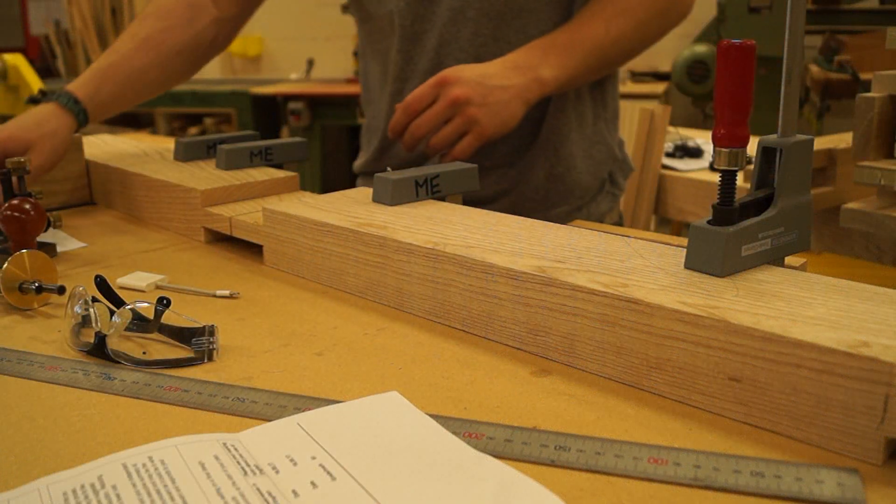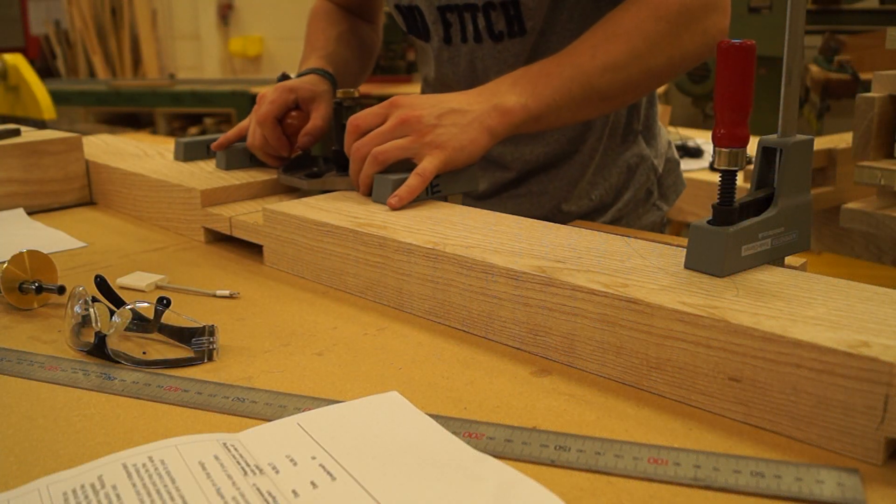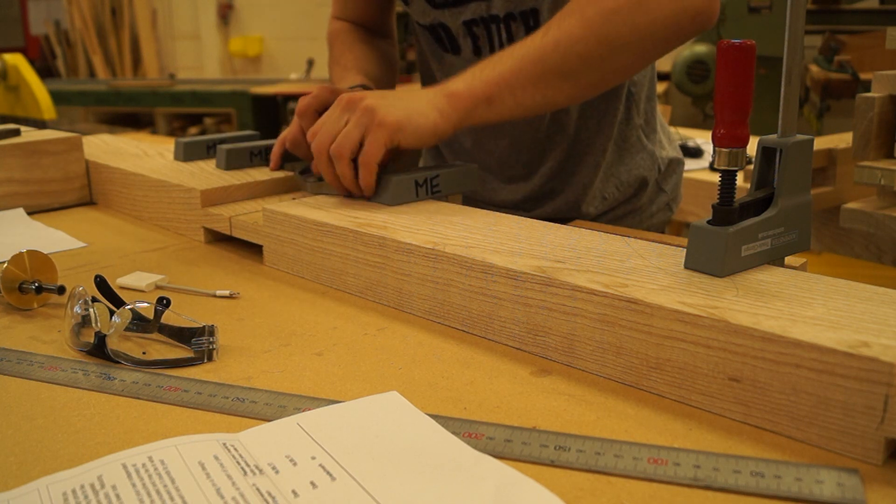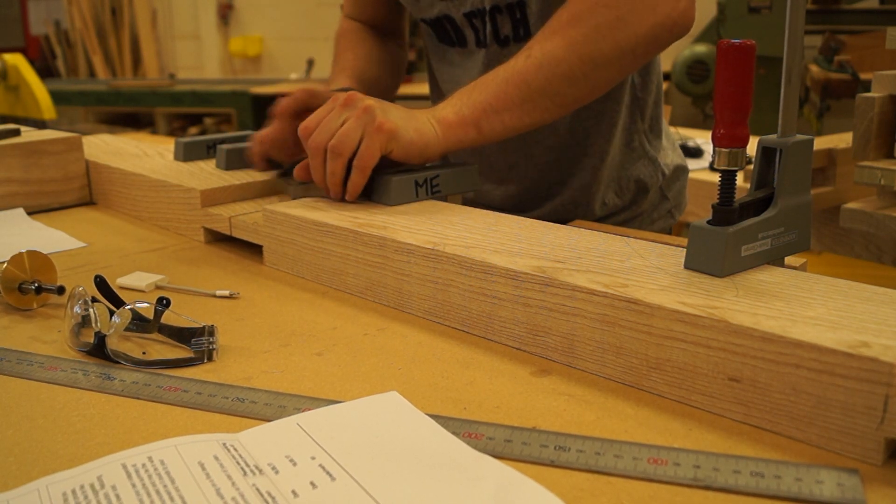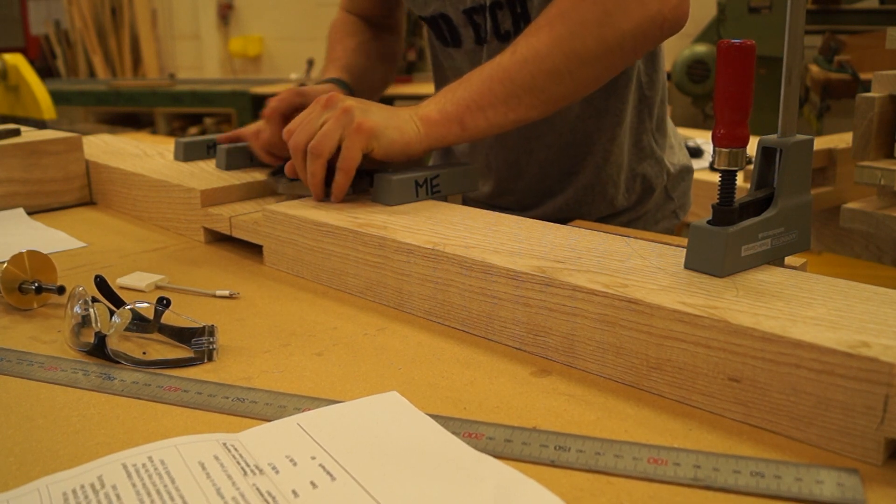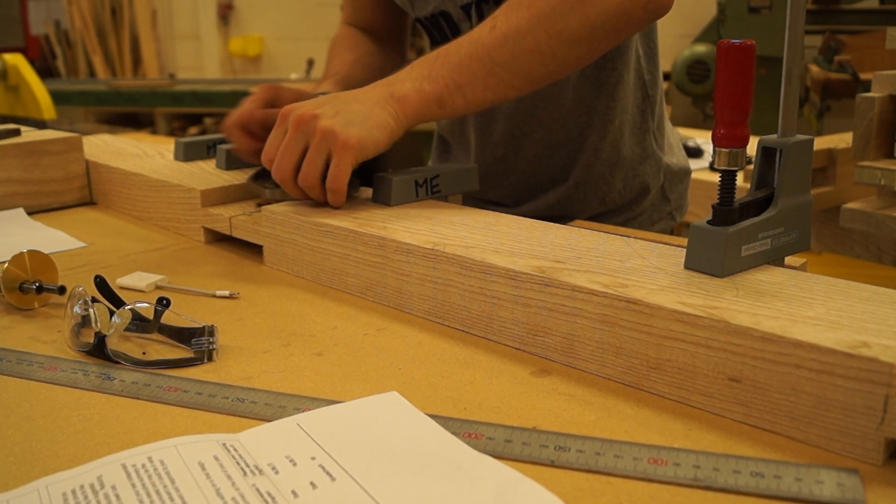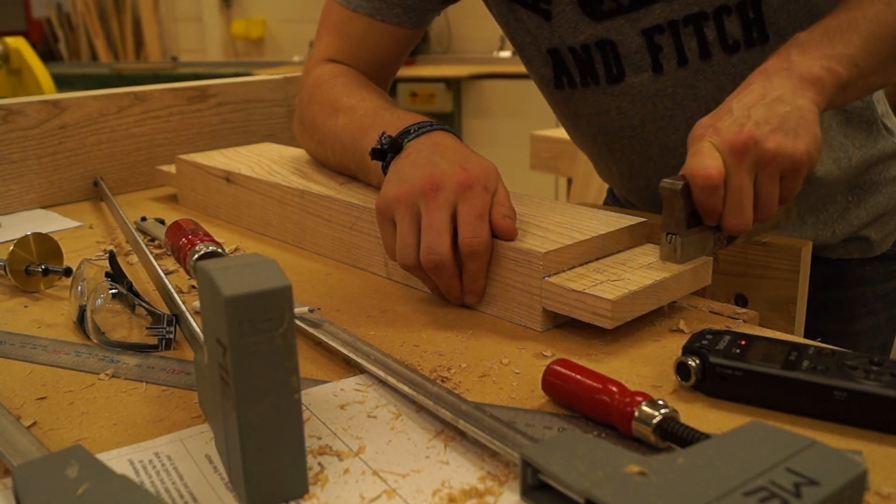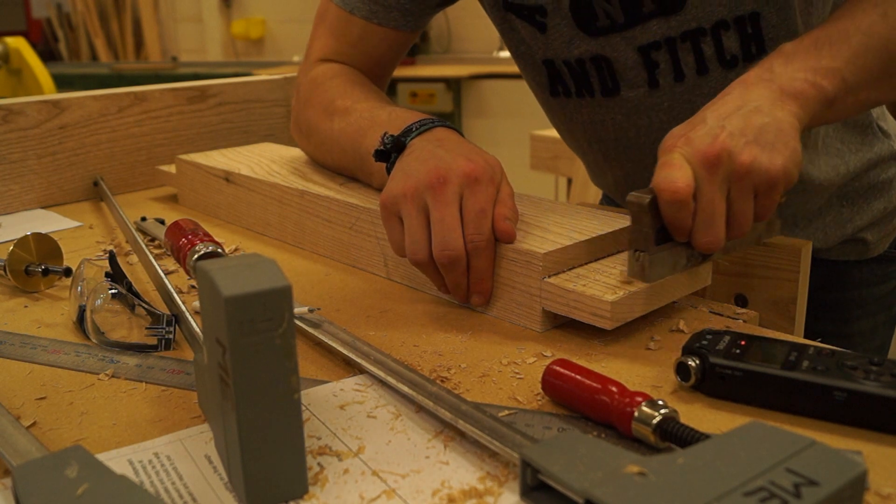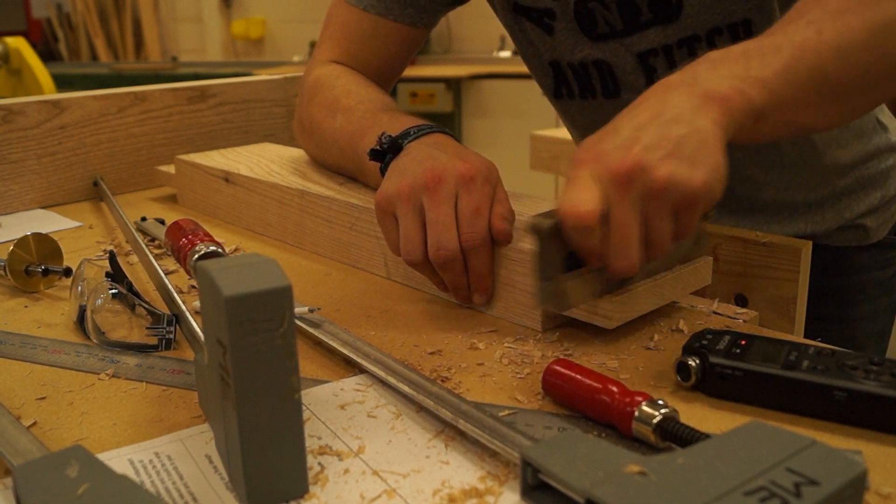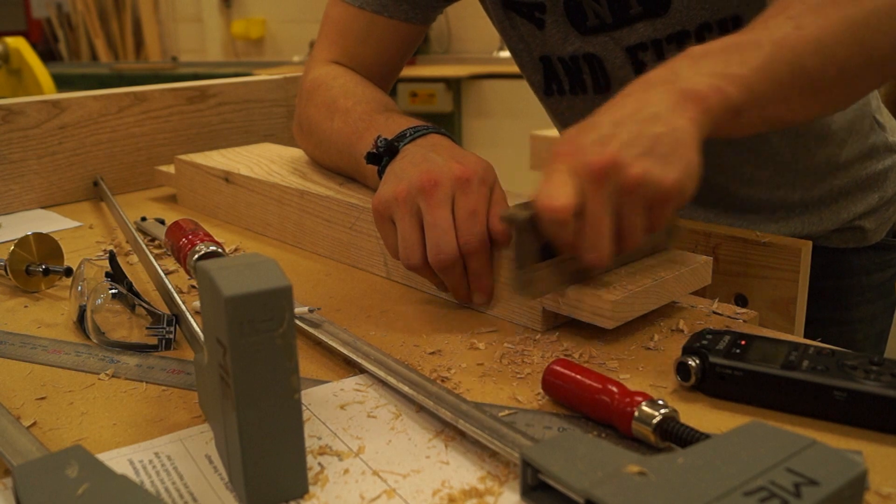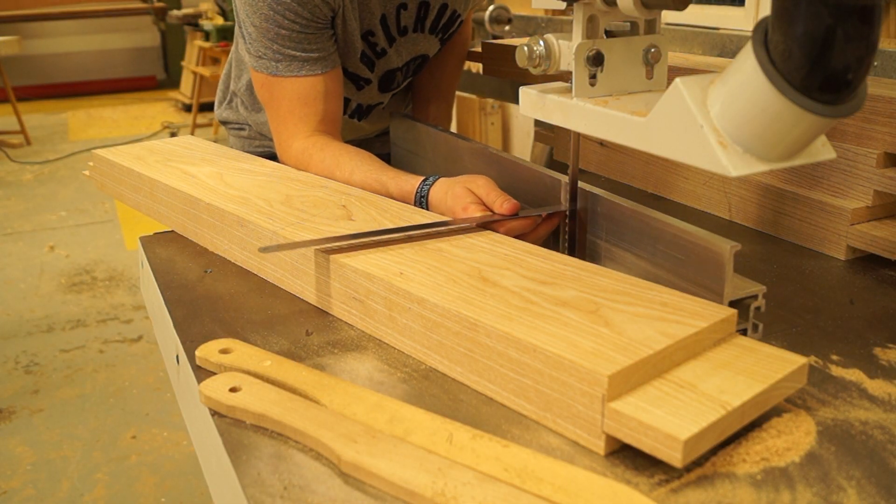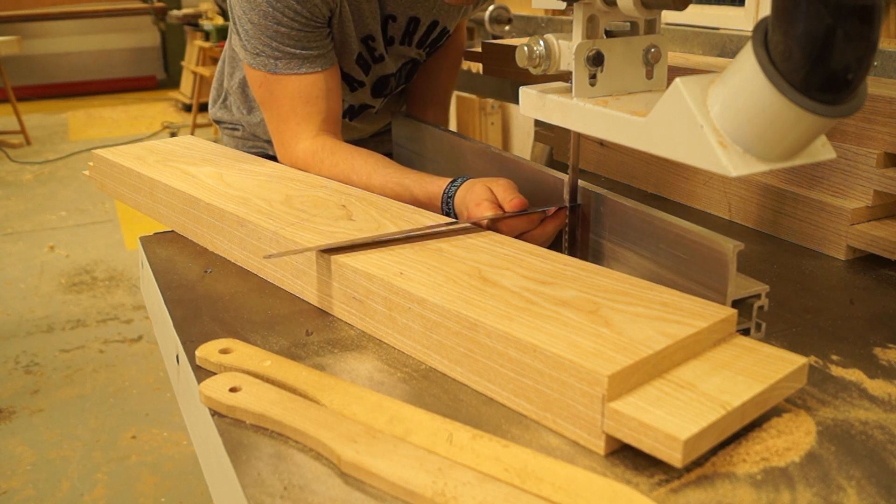To start with I used the router plane to clean up these tenons, which works really great because you can reference off that outer face and keep the tenon parallel without accidentally putting a skew on it. But in the end the gap was too big to properly support the router plane, so I moved onto a shoulder plane. And then the only thing left to do at this point was to cut the remaining cheeks off the tenon and create a shoulder on all four faces.